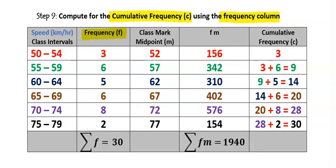Step nine: compute the cumulative frequency using the frequency column. Starting with 3, then add 6 to get 9, add 5 to get 14, add 6 to get 20, add 8 to get 28, and finally add 2 to get 30. The last cumulative frequency must equal the total frequency of 30; if they differ, go back and check for mistakes.